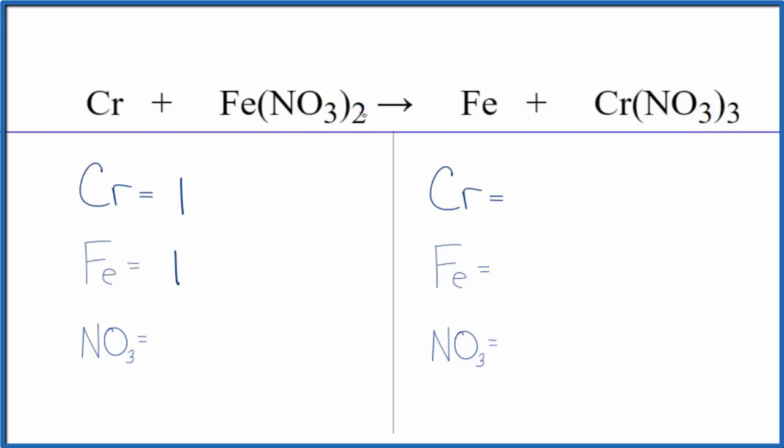We have one nitrate times two, so we have two nitrate ions on the reactant side. On the product side we have one chromium, one iron, and then the nitrate ion again—here we have three of them.